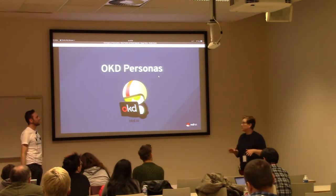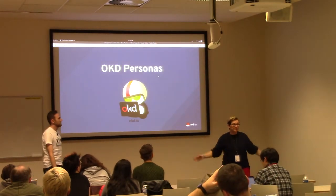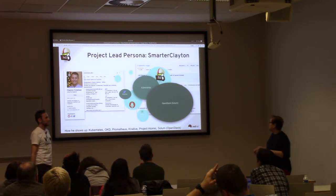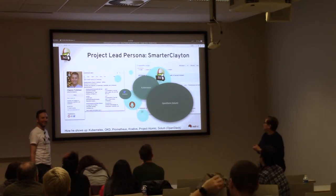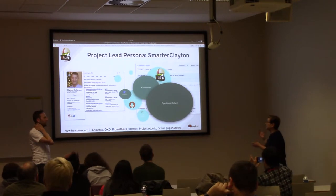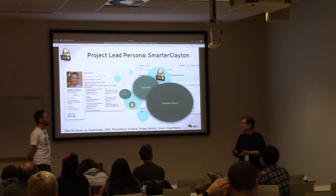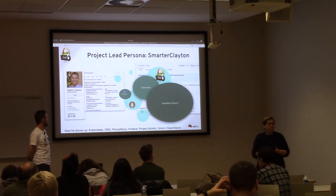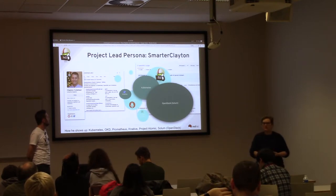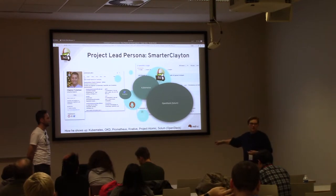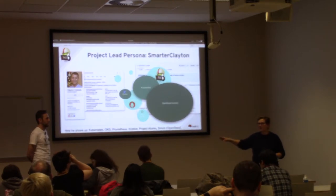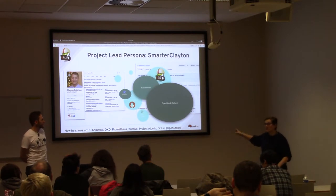The way we're going to approach looking at this data is based on personas, because there are a lot of people out there with a lot of different roles in the community. The first persona is one most of you will recognize right off the bat - Clayton Coleman. He's a project lead persona, someone who's really been driving the OpenShift projects from the early days. How he shows up in the datasets is contributing to Kubernetes, to OKD, one contribution to Prometheus, playing in Knative, Project Atomic, and way back, in Solum - a project I think is now dead, though someone out there is still using it.